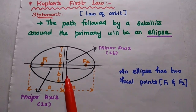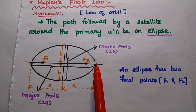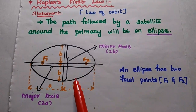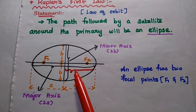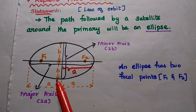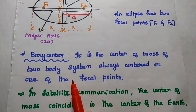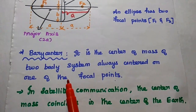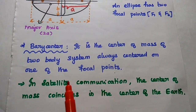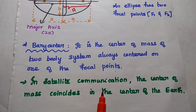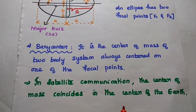This horizontal line is called the major axis, that is 2A. The vertical line is the minor axis, that is 2B. This half is known as the semi-major axis, that is A, and this half is known as the semi-minor axis. The next concept is the barycenter — it is the center of the primary mass of a two-body system, and it is always centered on one of the focal points. In satellite communication, the center of mass coincides with the center of the Earth, that is the primary mass.